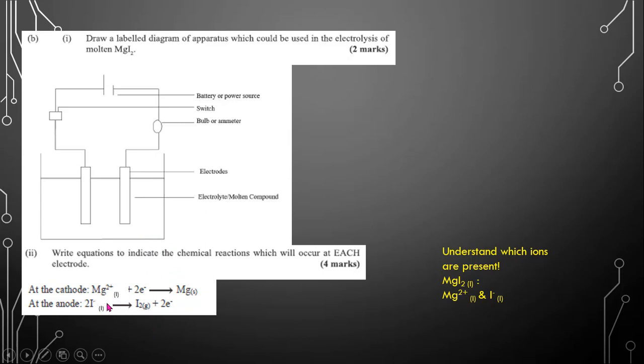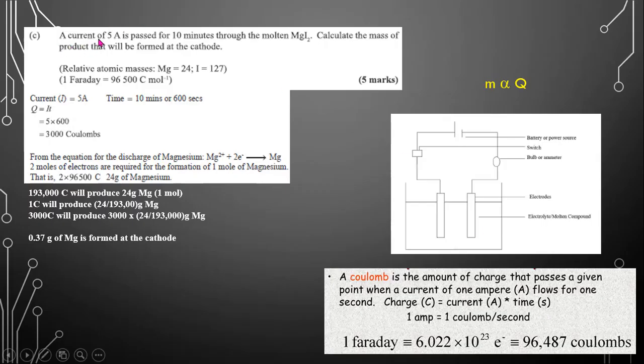You must have correct state symbols for this and it must be balanced in terms of the number of electrons here. A current of 5 amps is passed for 10 minutes through molten magnesium iodide. Calculate the mass of the product that will be formed at the cathode.